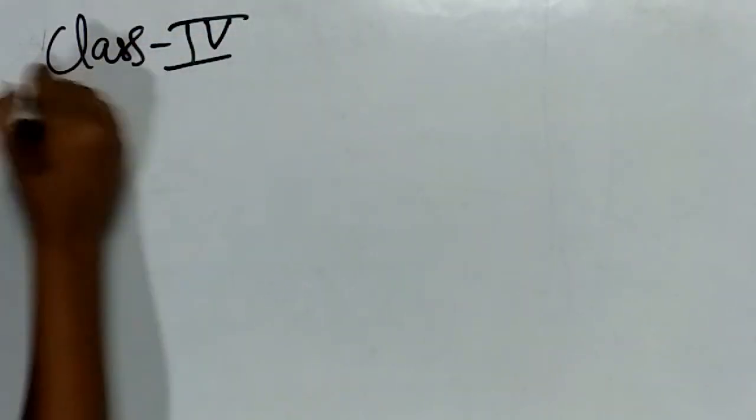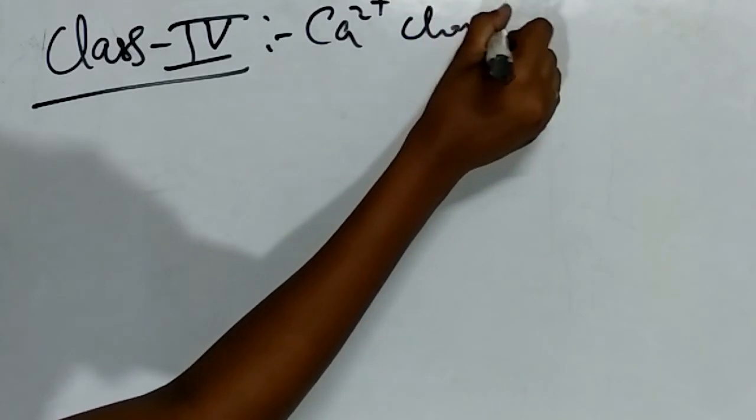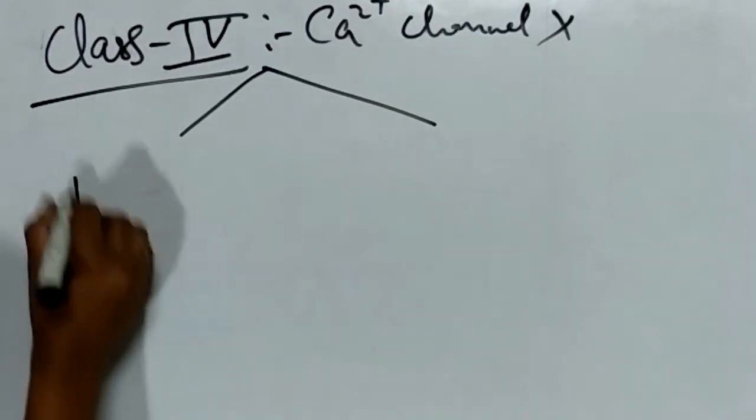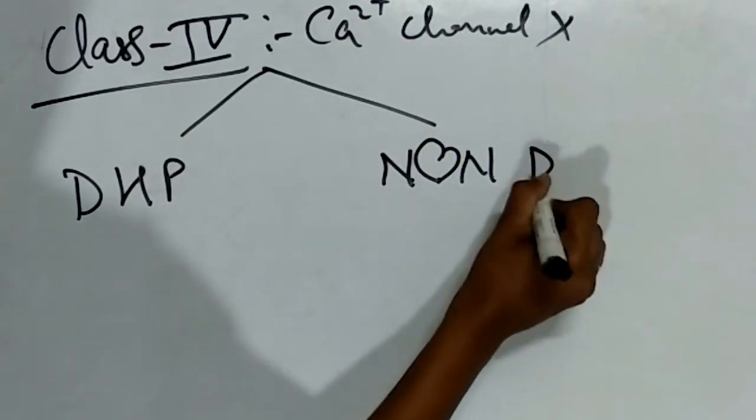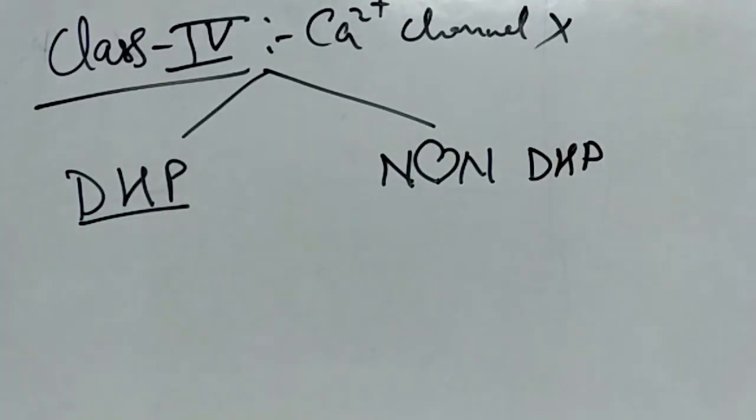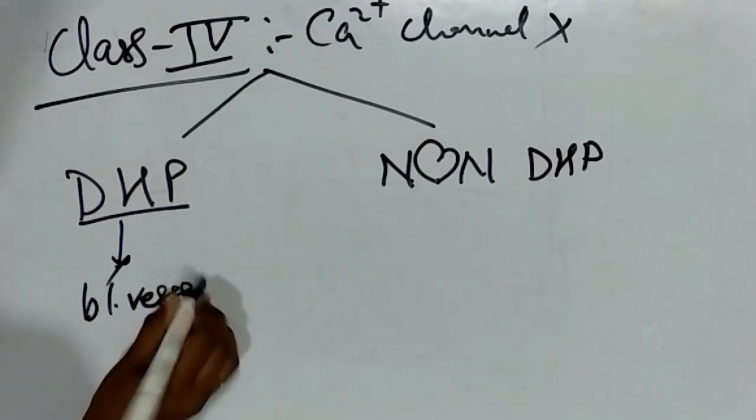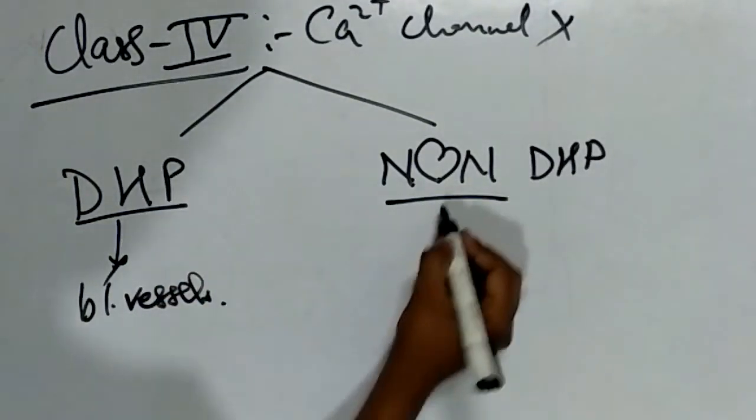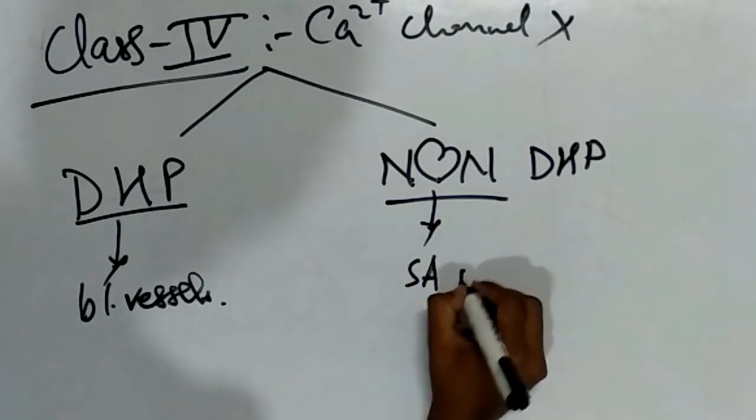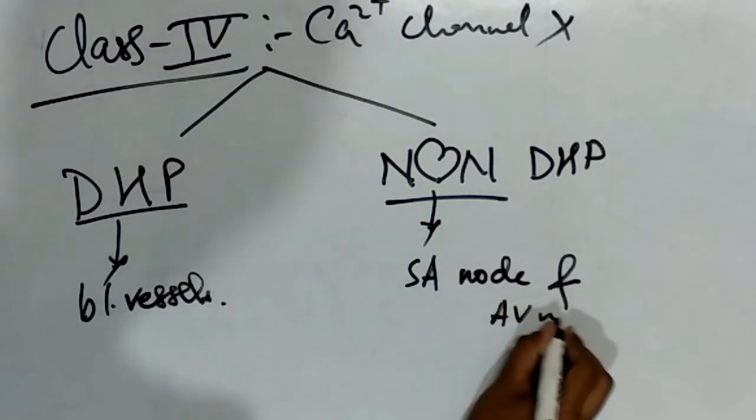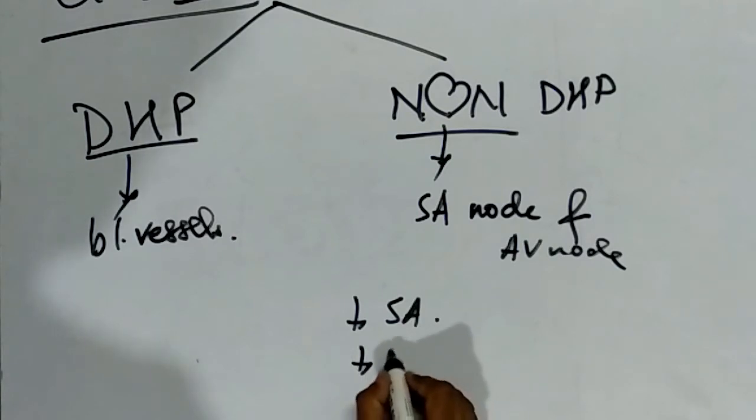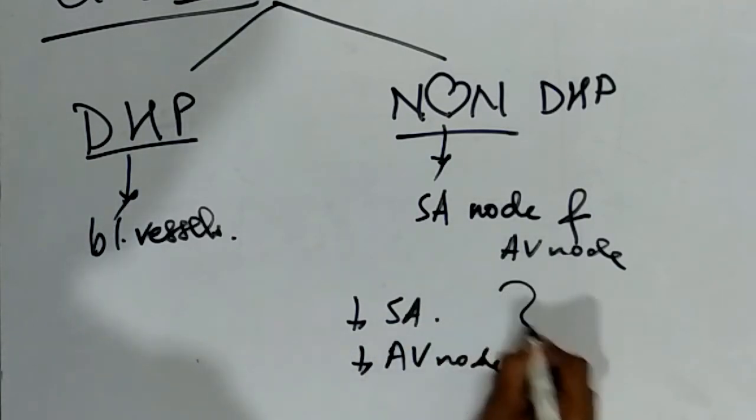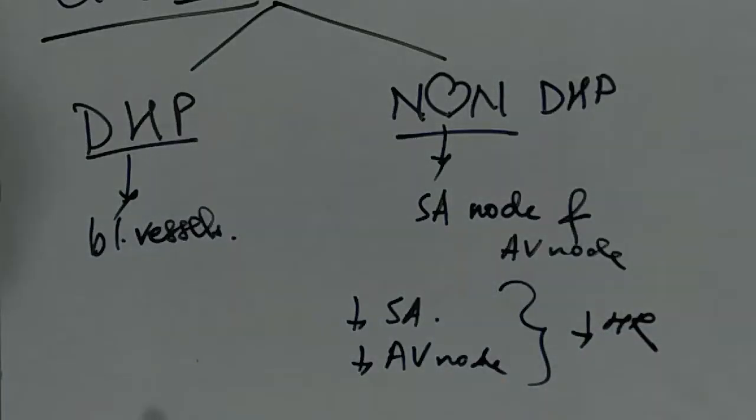Now we will see class 4 drugs. Class 4 drugs are calcium channel blockers. There are two types: DHP and non-DHP. DHP is dihydropyridines, which act on blood vessels. Non-DHP act on the heart, specifically SA node and AV node. The firing at SA node is decreased and conduction at AV node is decreased by non-DHP, which leads to decreased heart rate.